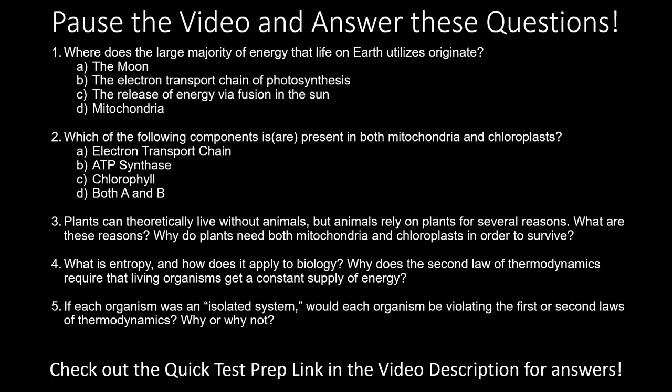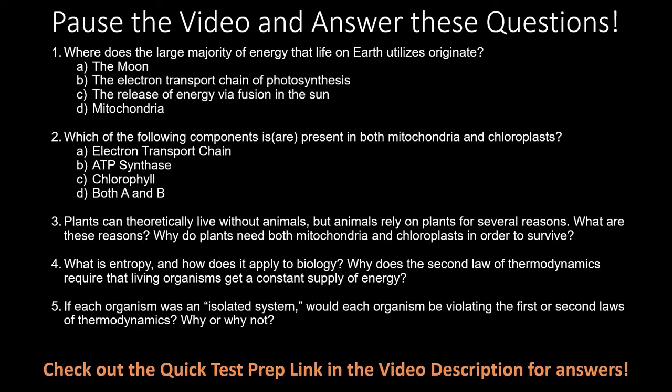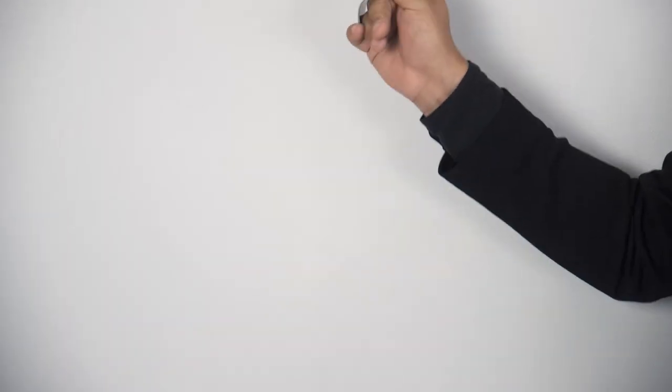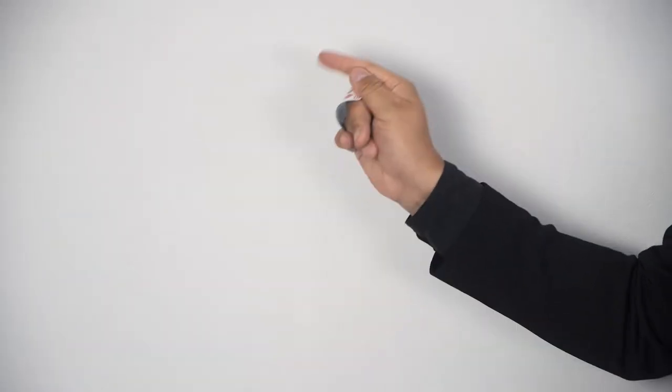The energy flows from the sun through photosynthesis and respiration, and back into the universe as it powers processes and is lost as heat. Without this constant input of energy, life on Earth would quickly return to entropy and die off. Now that we've covered the basics of energy flow and the laws of thermodynamics, pause the video and take this short quiz. You can find answers through the quick test prep link in this video's description.